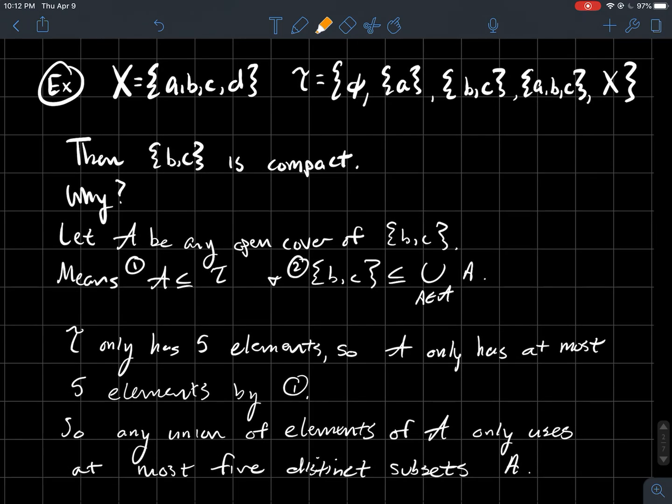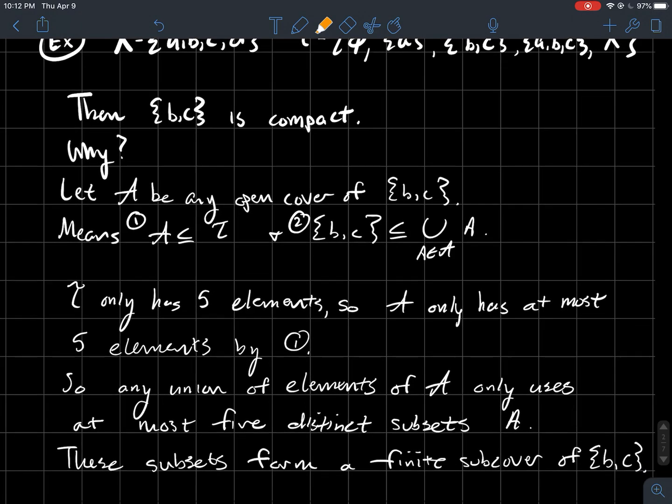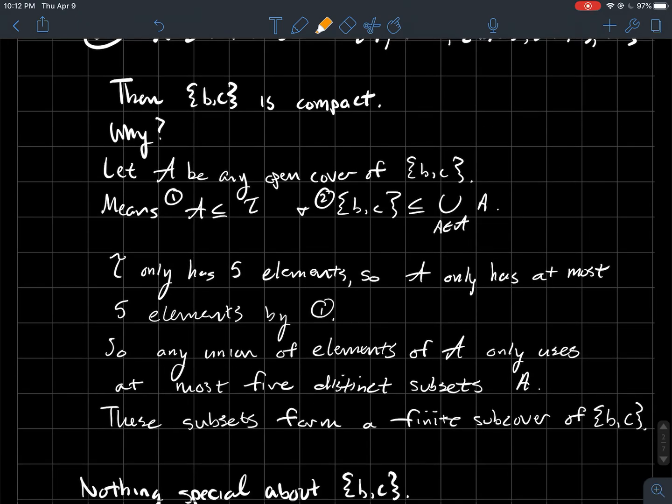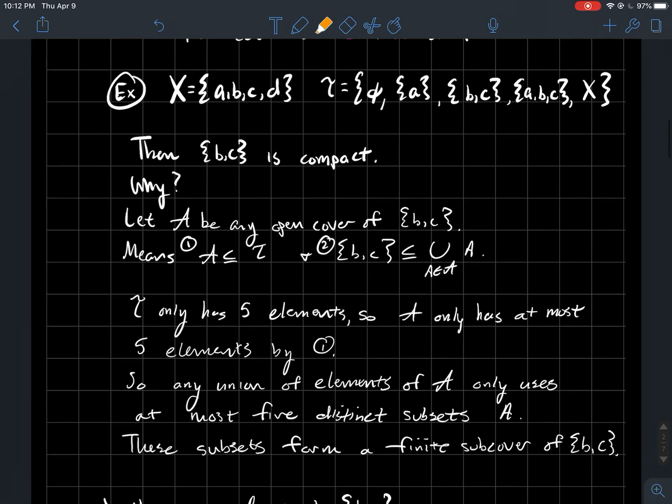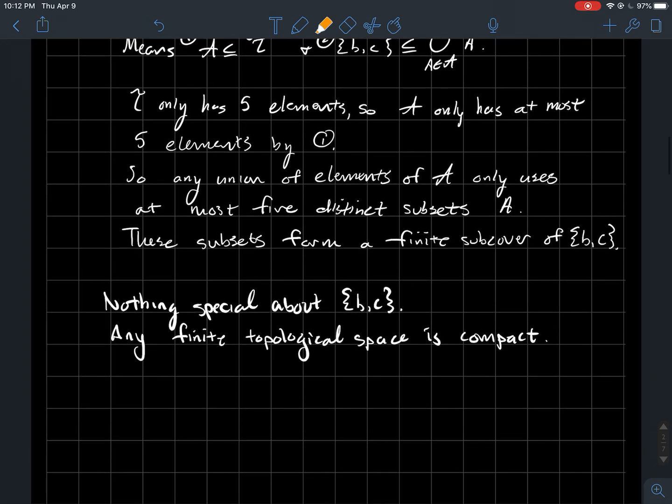And so in this case, we're saying, yes, we can, since we're only playing with a finite number of subsets to begin with. So there's nothing special about BC in this case. BC is compact. But you could have done that same kind of argument for any one of these subsets of X. In fact, any finite topological space, no matter what the topology is, is going to be compact.